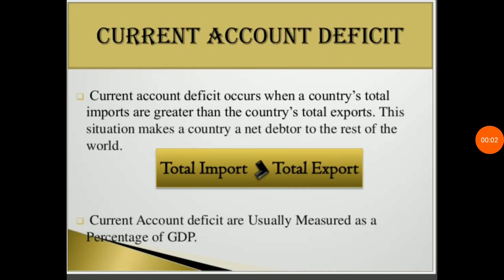Hello friends, today in this video we are going to explain about current account deficit. It is a very important topic. Current account deficit occurs when a country's total imports are greater than the country's total exports — basically a situation where total imports of a country are more than the exports of that country.